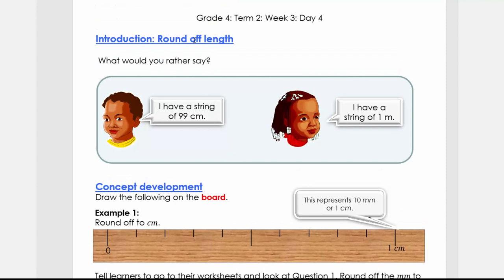Today's topic is rounding of length. When we say I have a string of 99 centimeters, it's easier to say I have a string of more or less one meter.